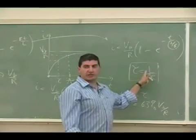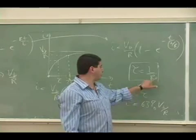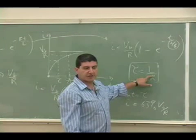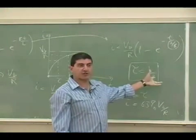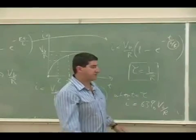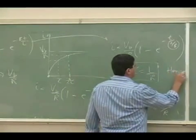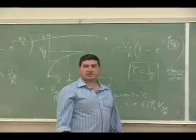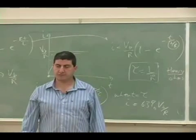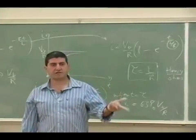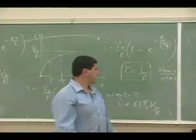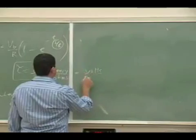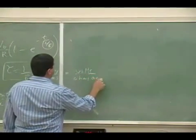Now, the other way we can show that this needs to be tau is that we can prove that this has units of seconds. Inductance over resistance has units of seconds. If we can show it has units of seconds, it makes sense that it's tau. Henry's divided by ohms should have units of seconds. Now, what is a Henry? It's voltage divided by rate of change of current, right? So Henry is volts divided by amp per second.